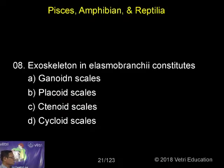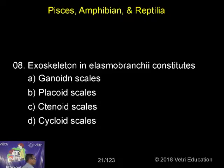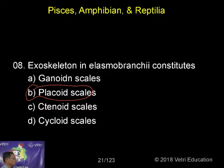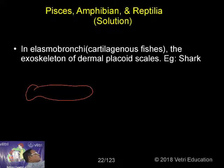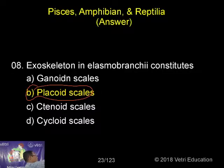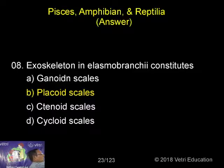The exoskeleton in elasmobranchs constitutes a peculiar type of scale found in sharks or elasmobranchs, also known as cartilaginous fishes. This is called the placoid scale. Ganoid, tenoid, and cycloid scales are found in bony fishes, while placoid scales are specific to sharks and cartilaginous fishes. Elasmobranch is the common name for cartilaginous fishes — the group which includes cartilaginous fishes.